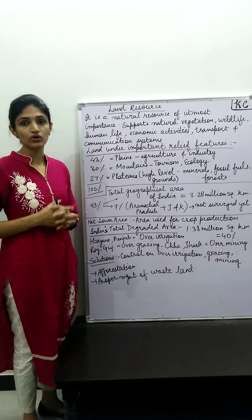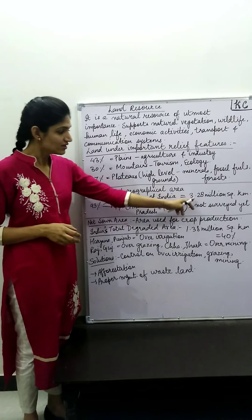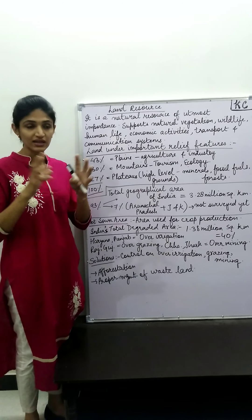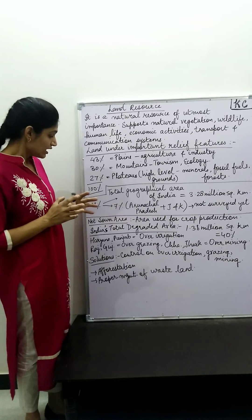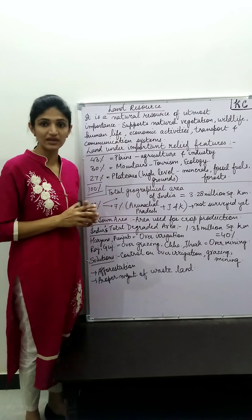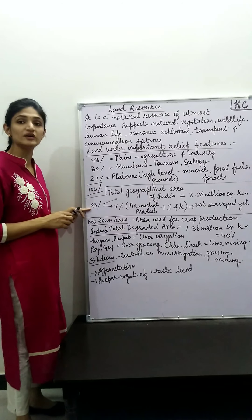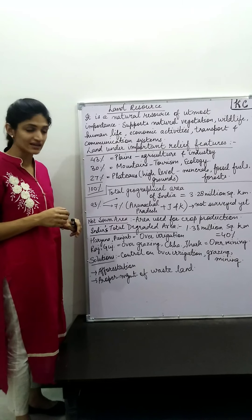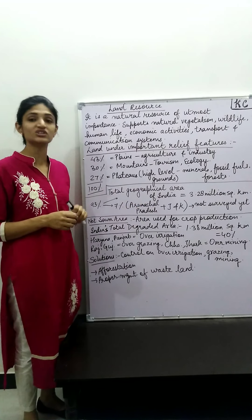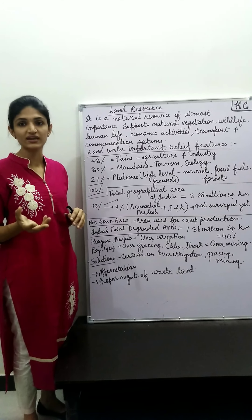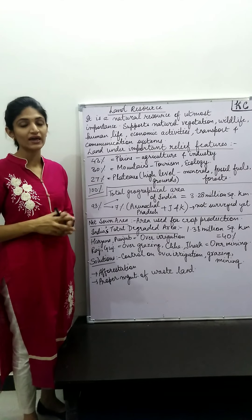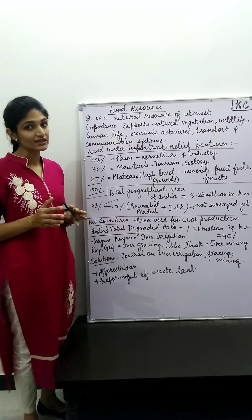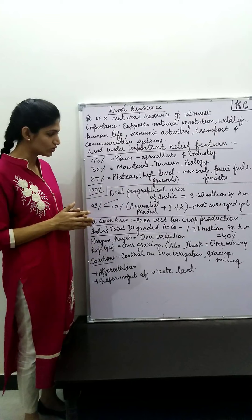It is a very important resource. If we look at percentage-wise, 43% of the area is plain land, which is very good for agriculture or industry set-up. 30% of the area is in the mountains, where there are perennial rivers that flow throughout the year. This area is very good from a tourism point of view and supports the ecology, making it good for plant life and wildlife.